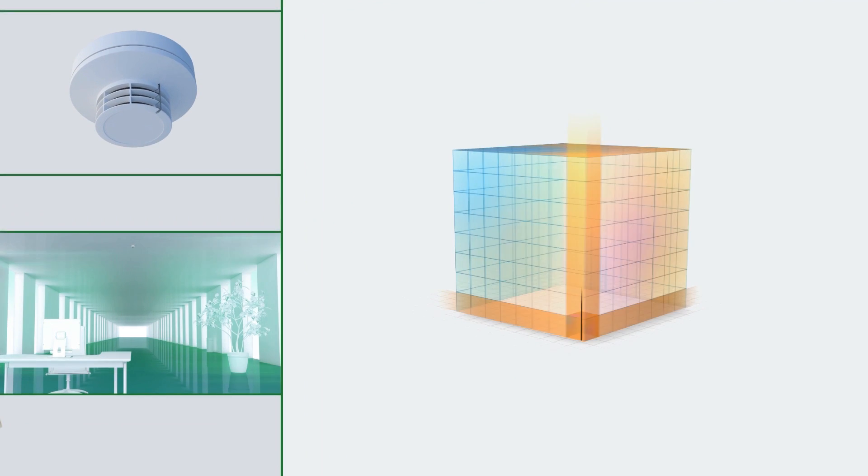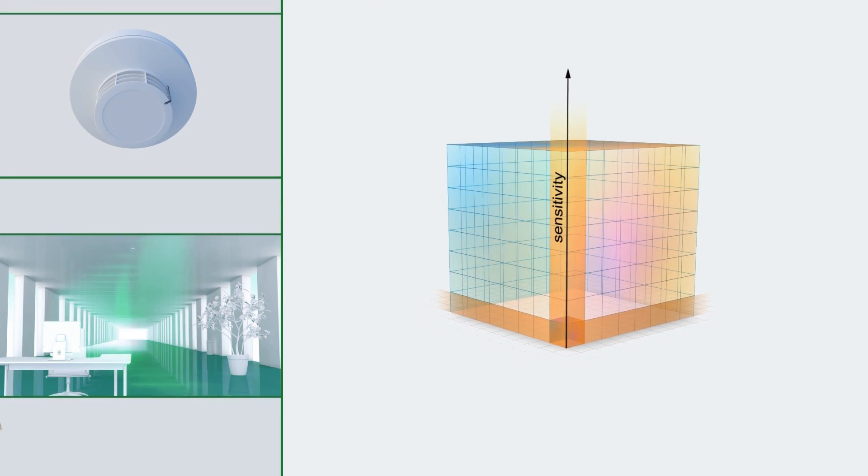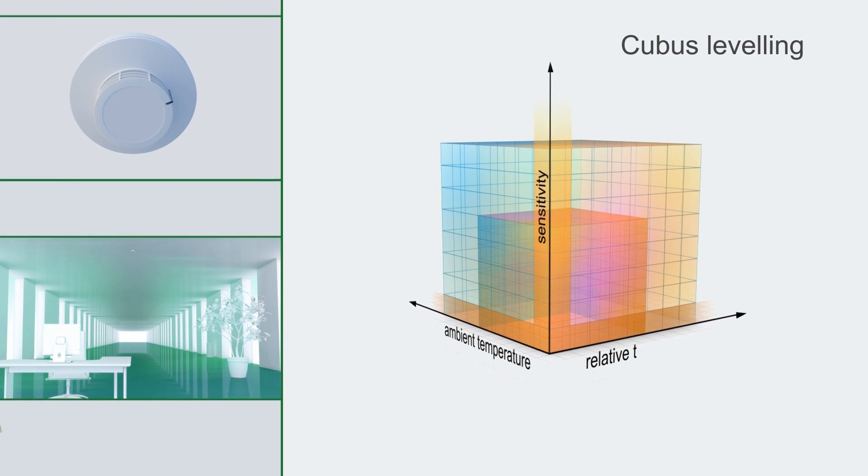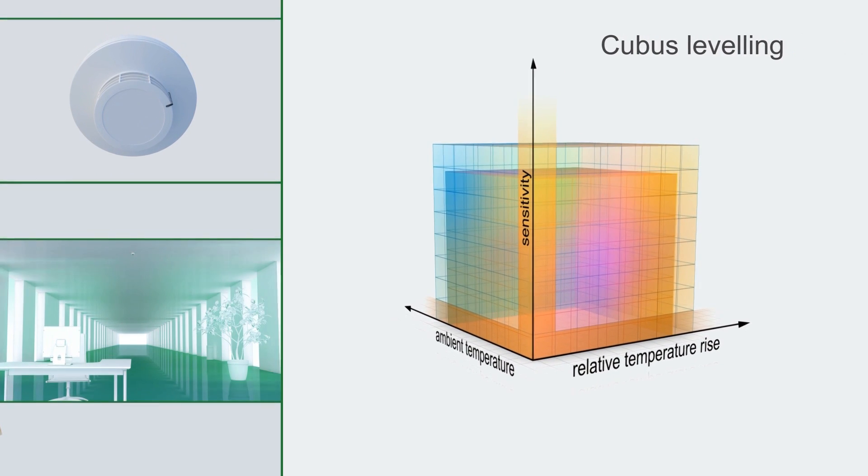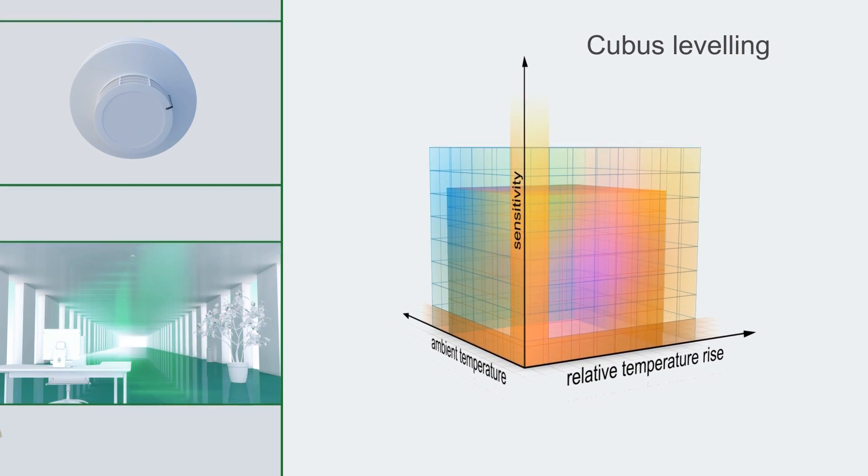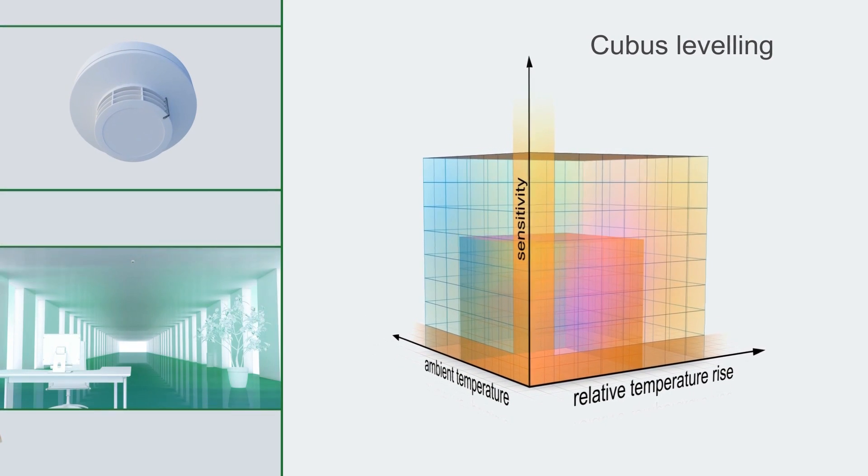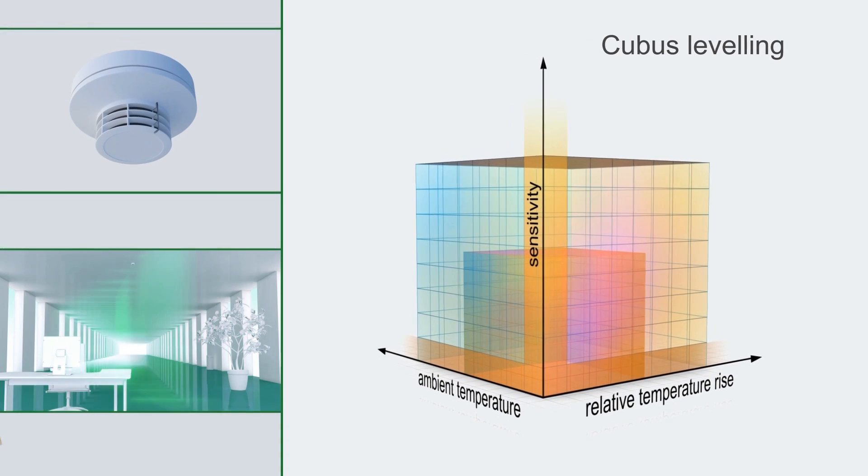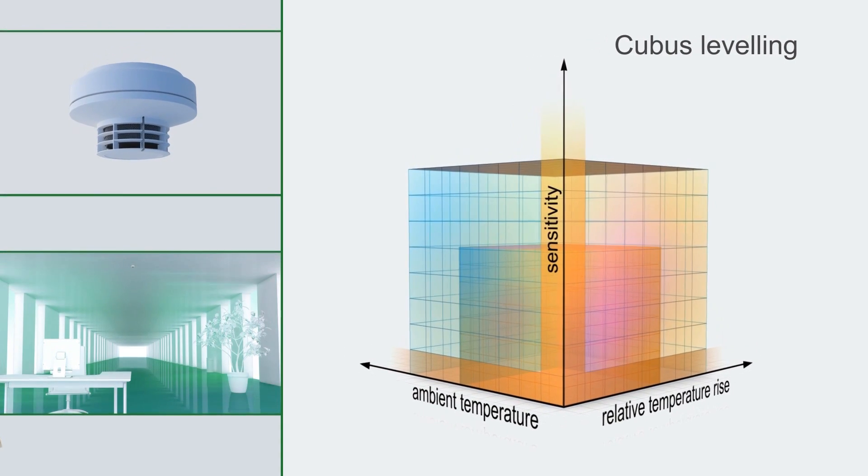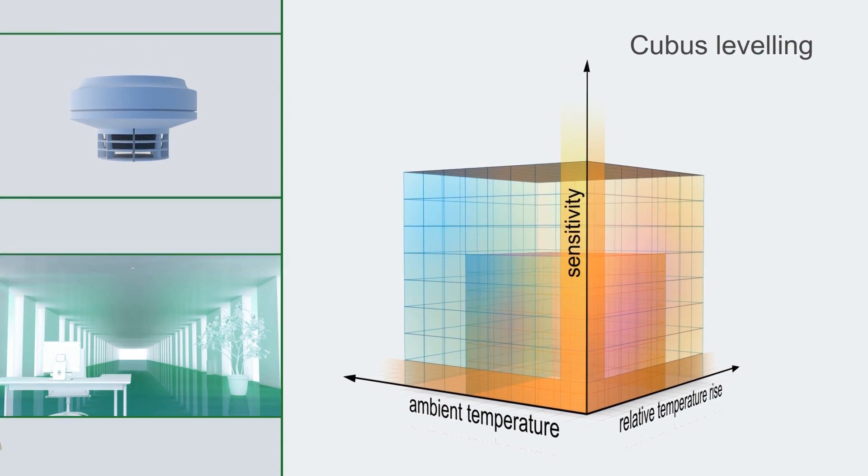All fire detectors in the Sikuristar range with a unique kubus leveling set their sensitivity independently according to the ambient conditions. The fire detectors set the optimum sensitivity on the smoke sensor depending on changes in the ambient temperature. This guarantees quick and reliable detection.